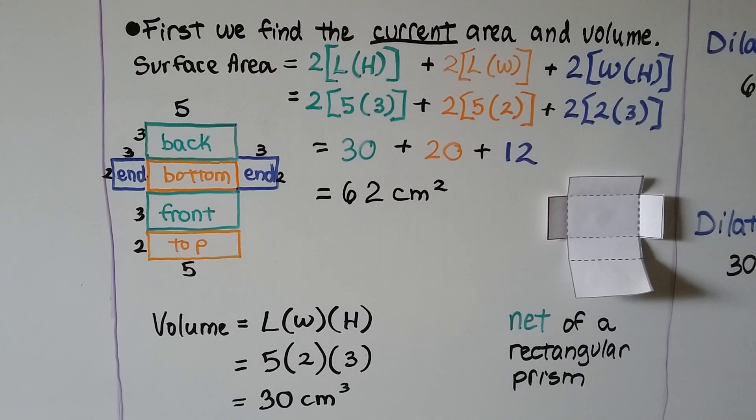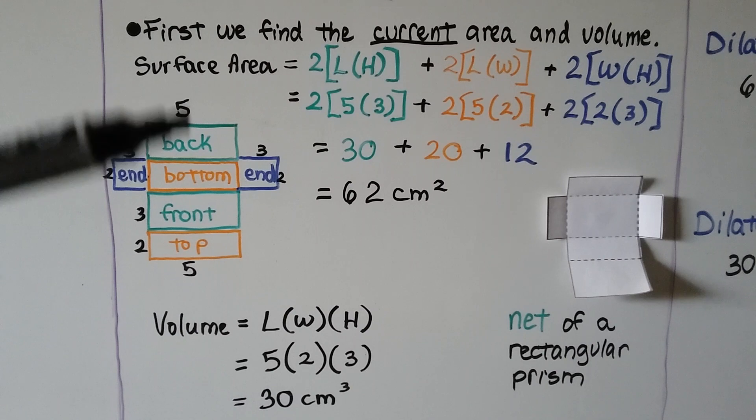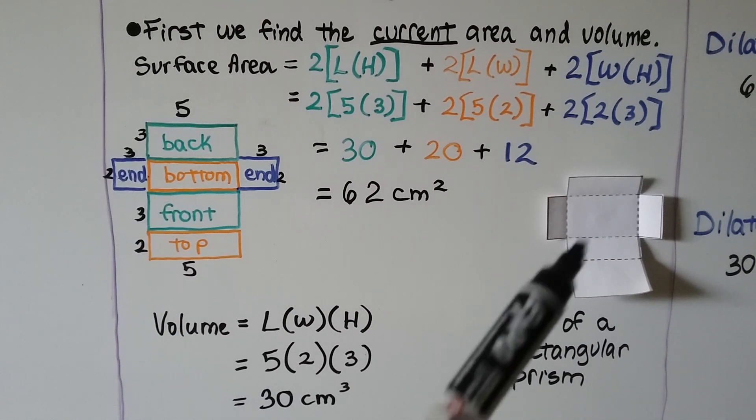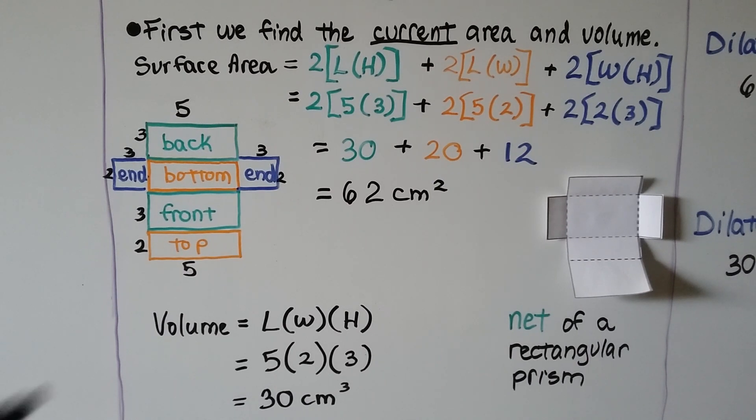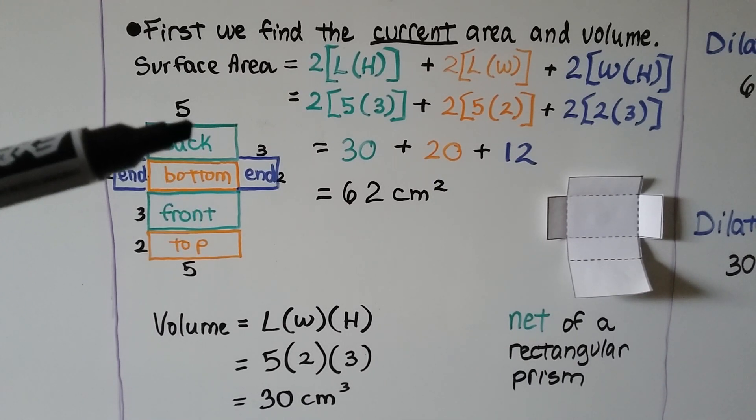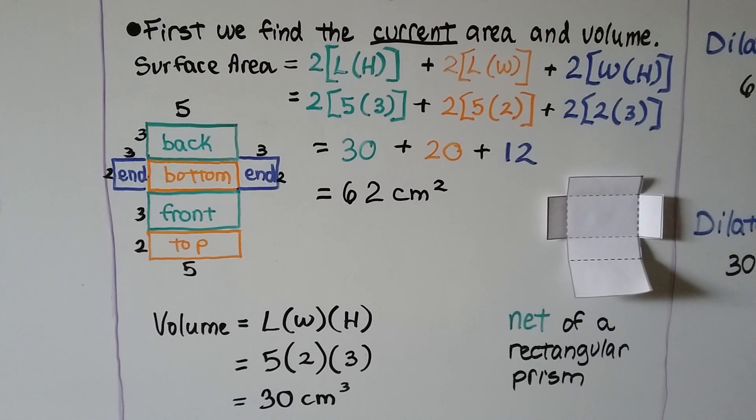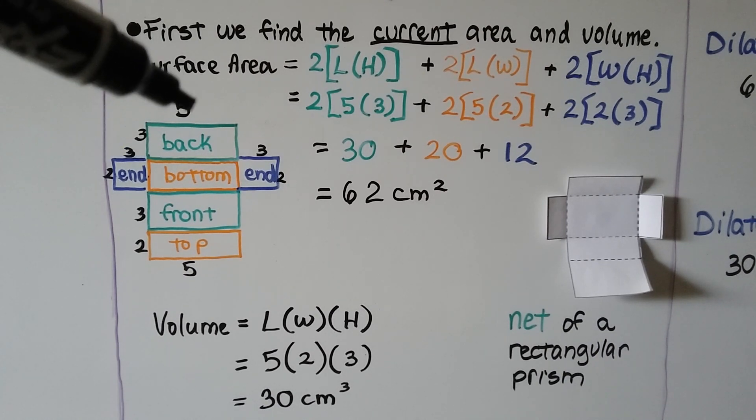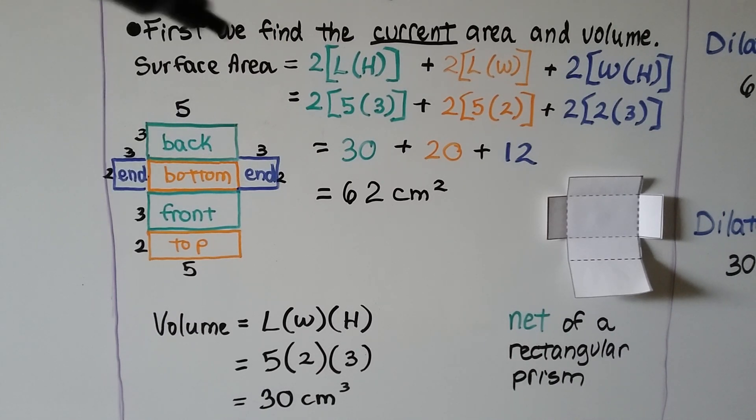So the first thing we do is find the current area and volume. If you look here, I've got them color-coded. We have, this is a net of a rectangular prism. It would look like this. We could actually fold it on the dotted lines and tape it together to make a rectangular prism. So this is unfolded. We have a front and a back, we have a top and a bottom, and we have a left and right end to our prism. So if we've got 3 for height and 5 for length, we've got two of these green ones, a back and a front. So that's going to be 2 times the length times the height, that's 2 times 5 times 3.